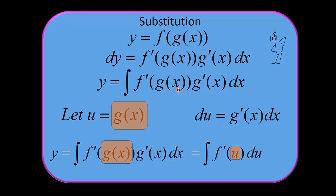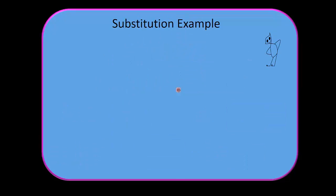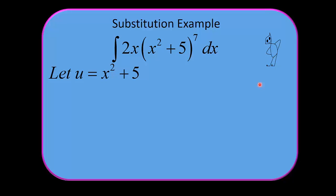Now let's look at an example. Let's suppose that we've got this, and we want to find the antiderivative. We would be happy if this were just x to the 7th, because we could just use the power rule for integration. But it's not that — it's got this mess in it: x squared plus 5 to the 7th. We don't like that. So here's what we do: I'm going to replace x squared plus 5 with u. Then I take the derivative in differential form, so I have du equals 2x dx. It's just like we had dy equals f prime of x dx, except now instead of y and x, we have u and x. Here's the derivative: 2x.